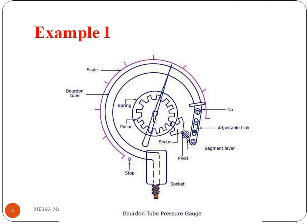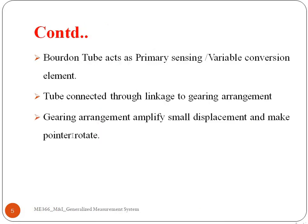The third stage is indication: with the help of the dial indicator, we can easily read out the signals. The Bourdon tube acts as a primary sensing element, or variable conversion element, converting pressure into displacement. Signal conditioning is done with the tube connected through linkage to the gearing arrangement. In stage three, the readout stage, the gearing arrangement amplifies the small displacement and the pointer rotates corresponding to the displacement.